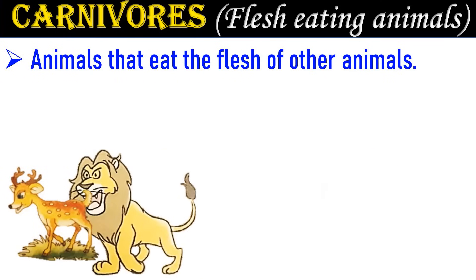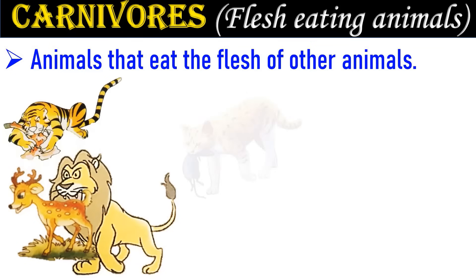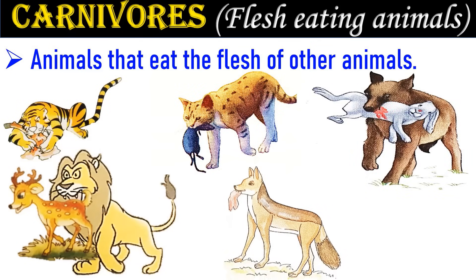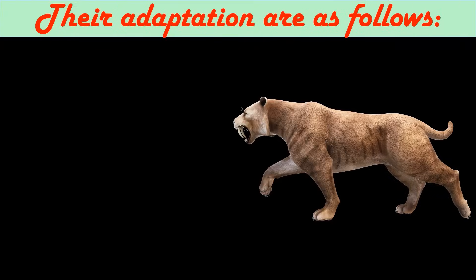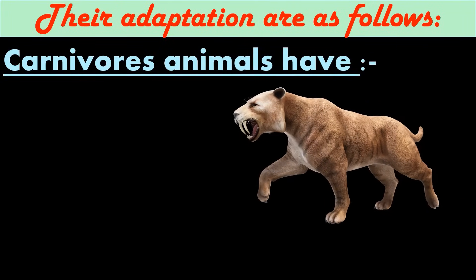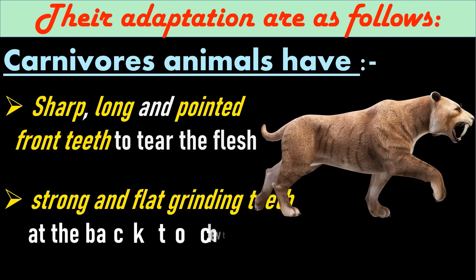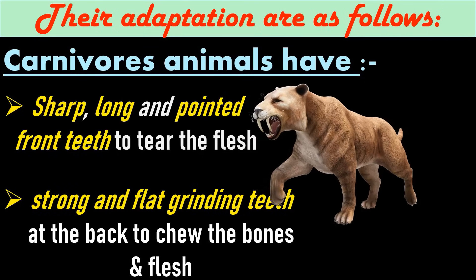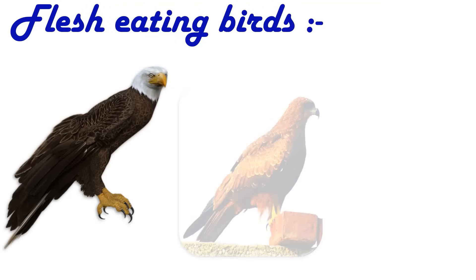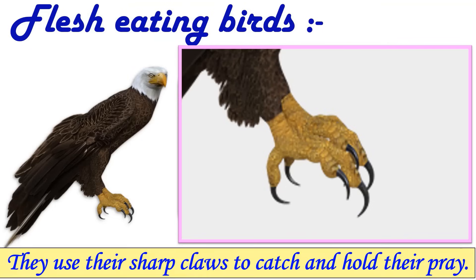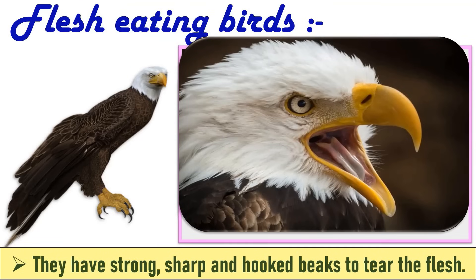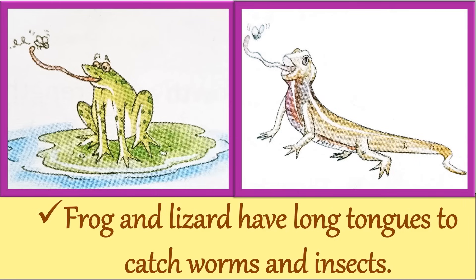Animals that feed on the flesh of other animals are called carnivores. Lions, tigers, cats, wolves, and jackals are examples. Carnivores have sharp, long, pointed front teeth to tear flesh and strong flat grinding teeth at the back to chew bones and flesh. Birds such as eagles, kites, and vultures also eat flesh — they use sharp claws to catch and hold their prey, and strong, sharp, hooked beaks to tear flesh. Frogs and lizards have long tongues to catch worms and insects.